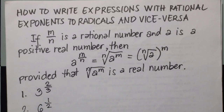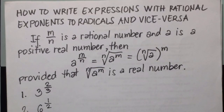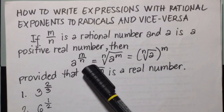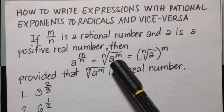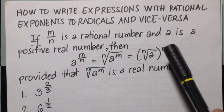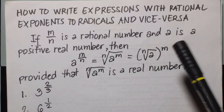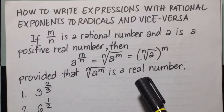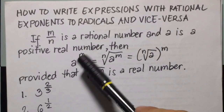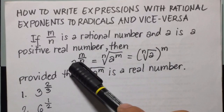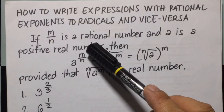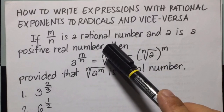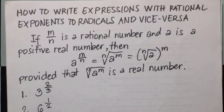If m over n is a rational number and a is a positive real number, then a to the power of m over n will be equal to the nth root of a to the power of m, which equals the quantity of the nth root of a raised to the power of m, provided that the nth root of a to the power of m is a real number. Here, m — the numerator — will be the exponent of the base, and the denominator will be the index or order.